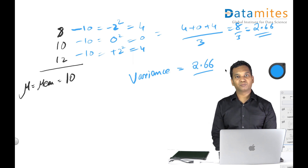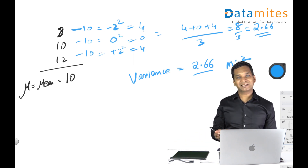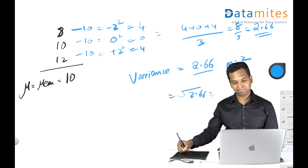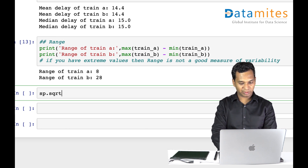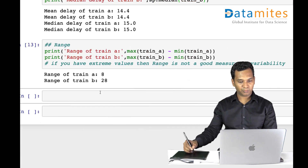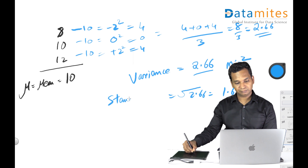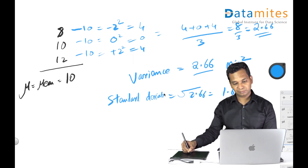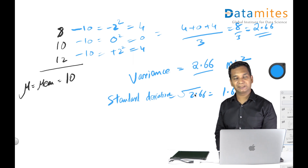Variance is a very good measure, but it's not very readable because the units are minutes squared. To bring it back to normal units, you take the square root. The square root of 2.66 is approximately 1.63. This is called standard deviation. Standard deviation is simply the square root of variance, and variance is the average of the squared deviations of all data with respect to the center.